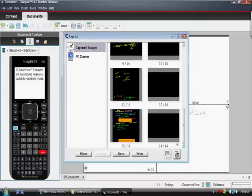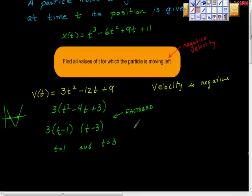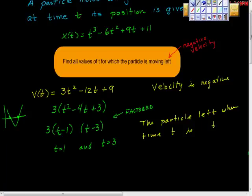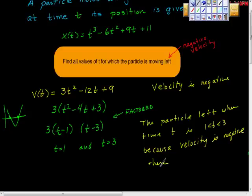Go back to our question. And I'm going to answer it here. The particle is moving left when time t is greater than 1 and less than 3, right? Because velocity is negative there. Is that all right? It's not bad.